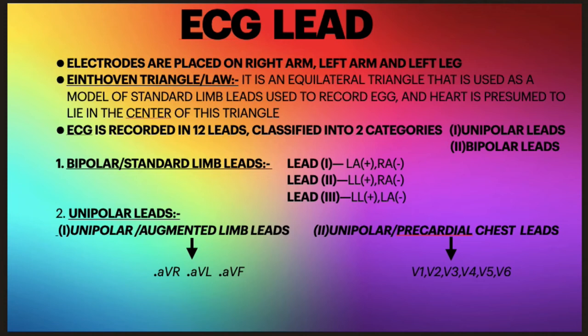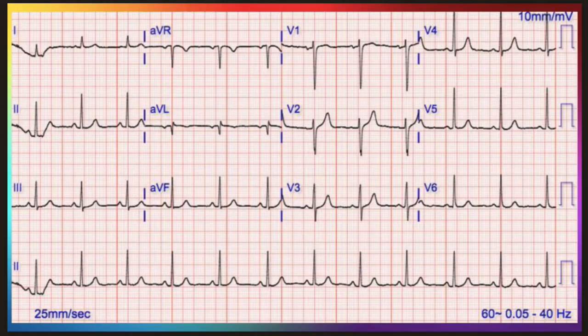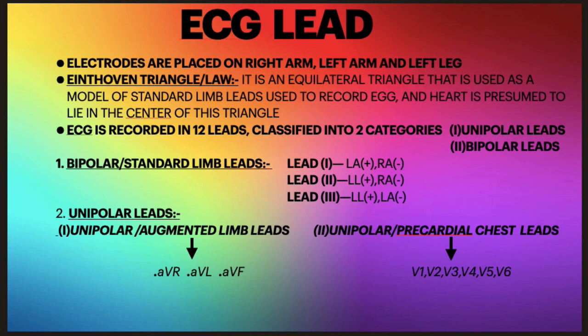ECG is recorded in 12 leads. Looking at the screen, you can count all 12 leads — one through twelve. These 12 leads are classified into two categories: unipolar and bipolar. Unipolar means one active electrode, bipolar means two. Let's start with bipolar leads, also called the standard limb leads.